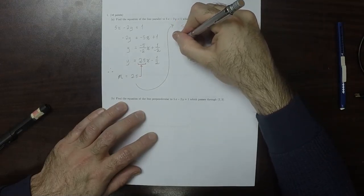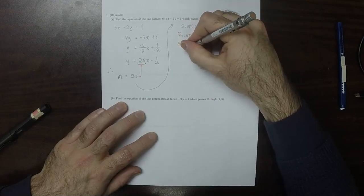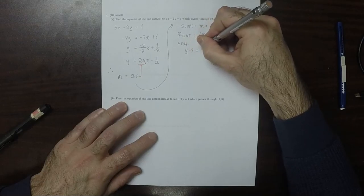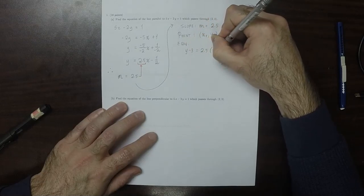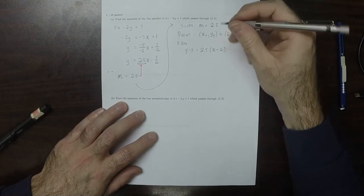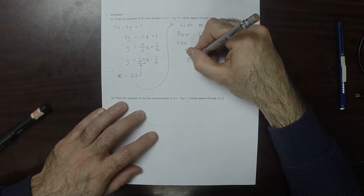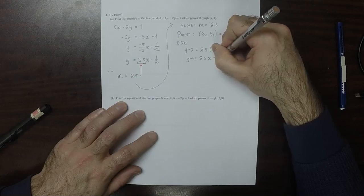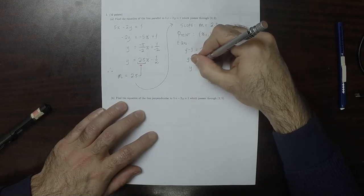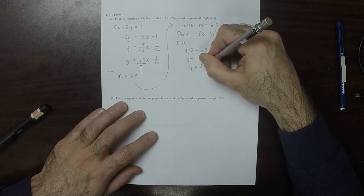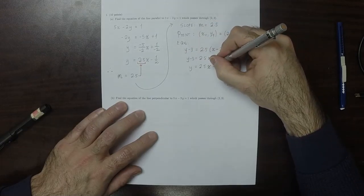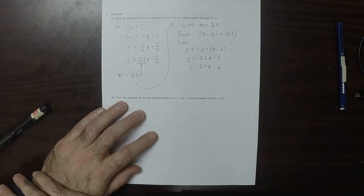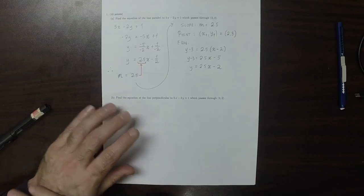Therefore, the equation is y minus 3 is 2.5 times x minus 2. So that would be y minus 3 is 2.5x minus 5. And so y equals 2.5x minus 2. That's the answer to part a.